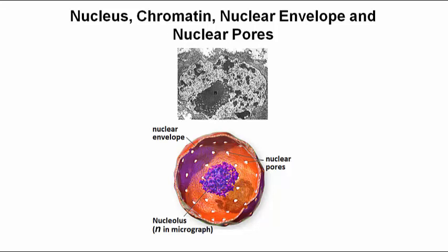The nucleus itself contains chromatin — DNA bound to proteins. Chromatin is embedded in a nuclear matrix surrounded by nucleoplasm.